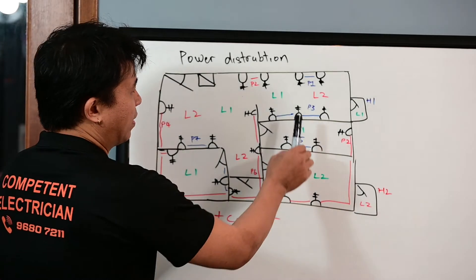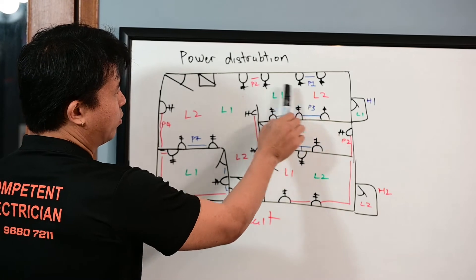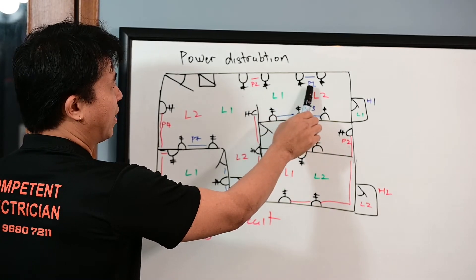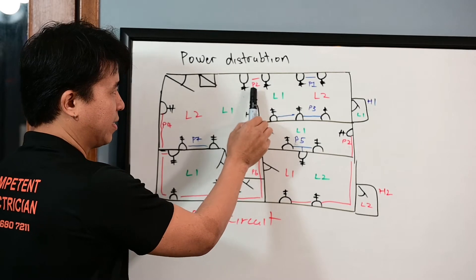Now I'm going to discuss with you the red color circuit and the blue color circuit. The blue color circuit is powered by RCD1, the red color circuit is powered by RCD2.